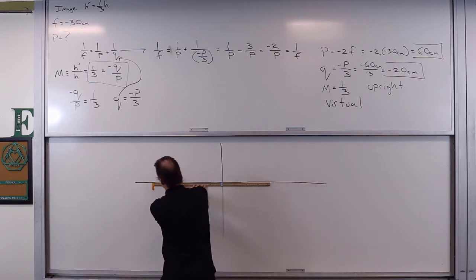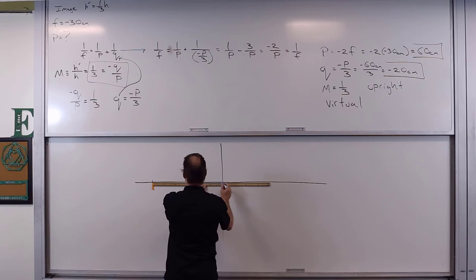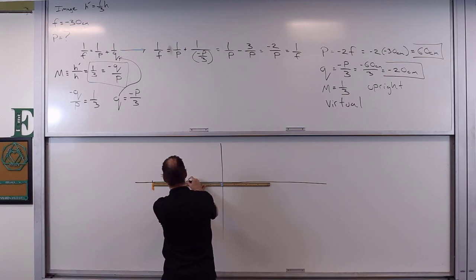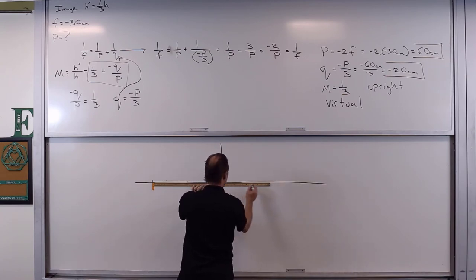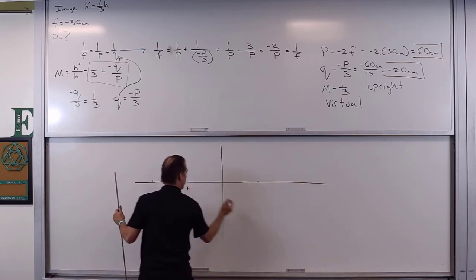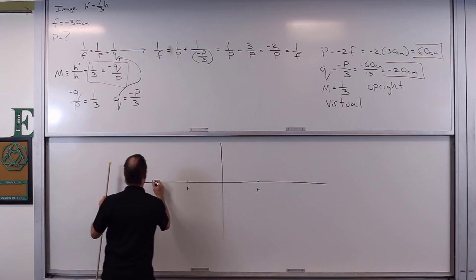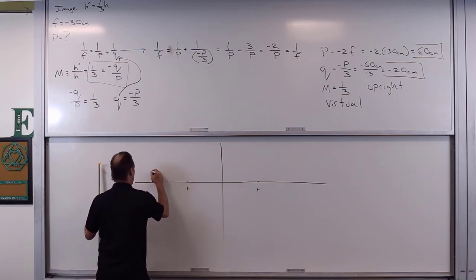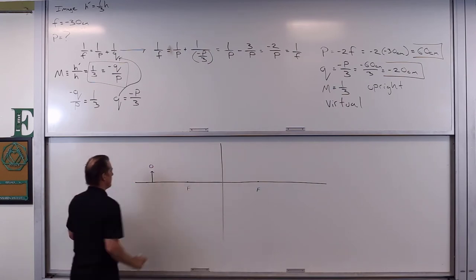Take a 60. There's going to be the object. And then 30, 10, 20, 30. Focal point. 10, 20, 30. Focal point. And that's what we've got going on. Focal point. Focal point. And then we'll take object like that.